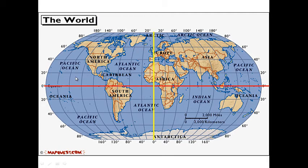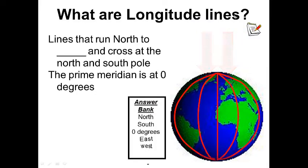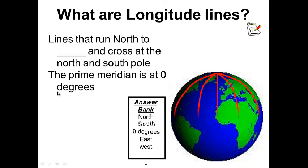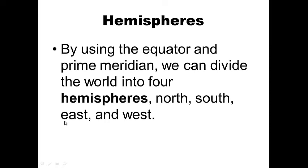For your notes — what are longitude lines? Question on the left-hand side, answer on the right-hand side. Use the word in the answer bank that best completes the blank. Go ahead and pause this while you write, and I'm going to move on. Hemispheres: hopefully you've heard of hemispheres before. By using the equator and prime meridian we can divide the world into four hemispheres — north, south, east, and west.